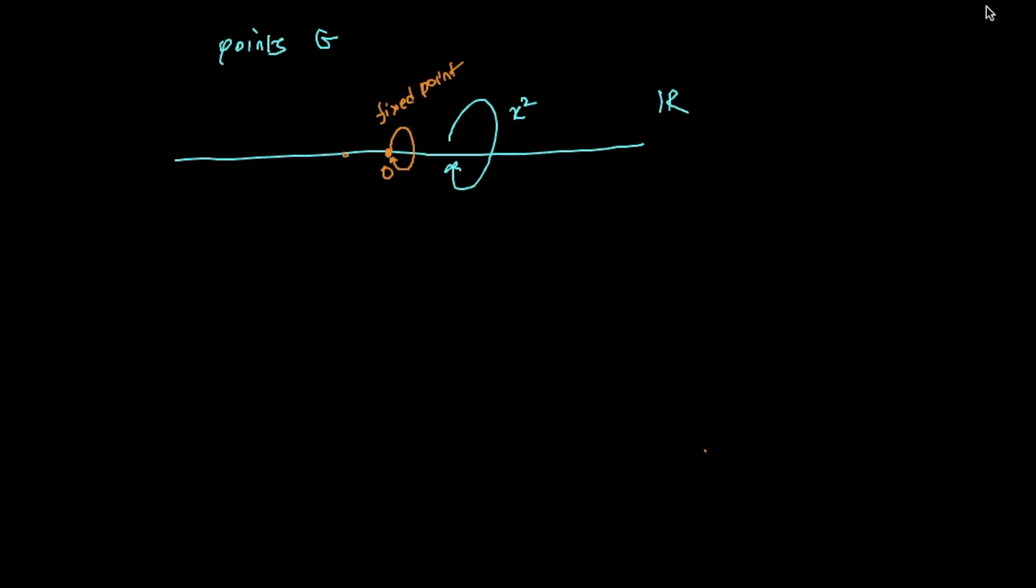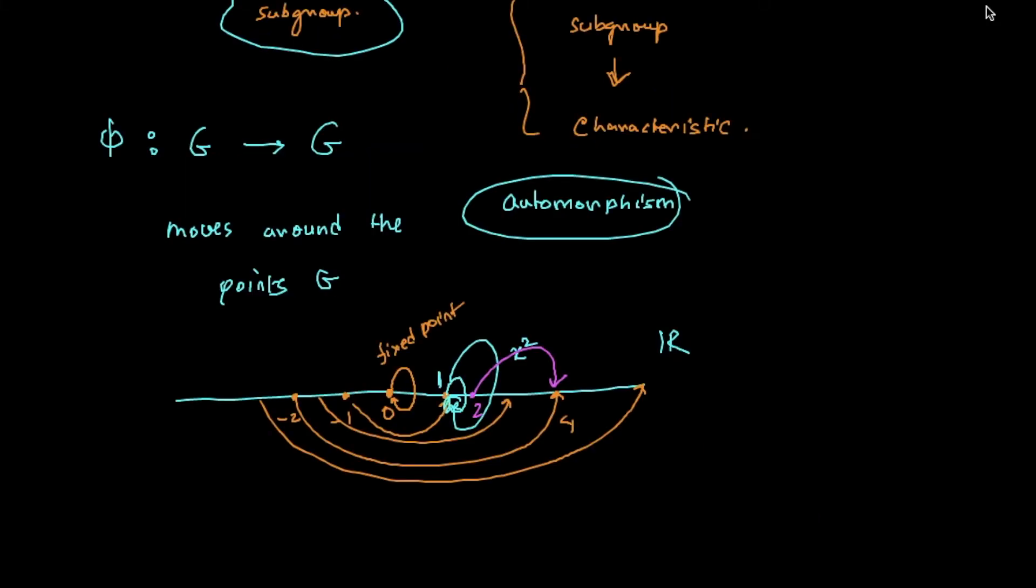What happens to negative 1? Well, negative 1 gets moved to 1. Negative 2 gets moved to 4. Everything to the left of 0 is jumping to the right. And 1 is another fixed point - if you square 1, you get 1 itself. But everything else, suppose this is the point 2, it will jump to 4. Point 3 will jump to 9 and so on.